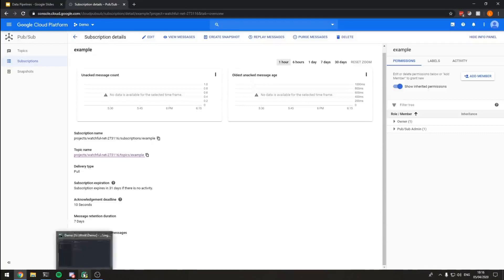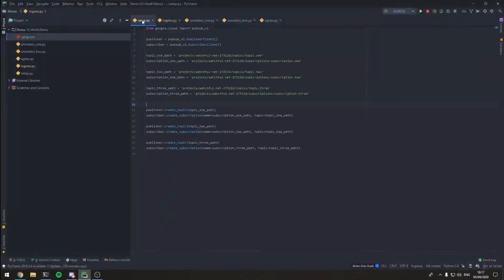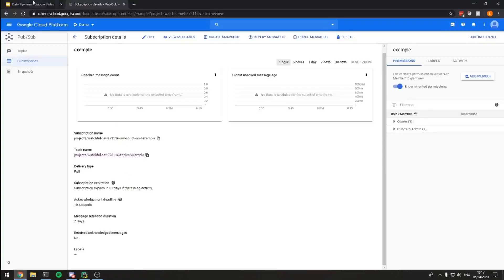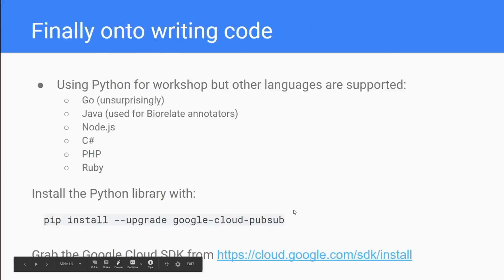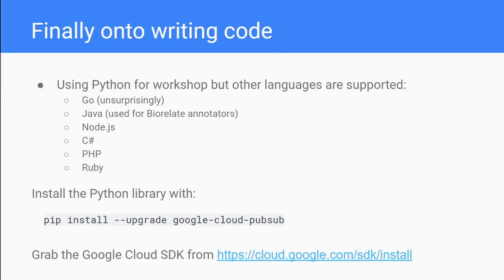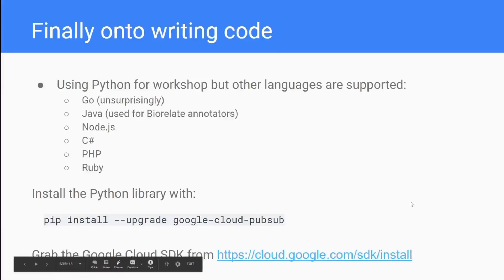Now if we want to look at how to do this programmatically - for this workshop I'm using Python, but Google PubSub is supported in other languages including Go, Java, Node.js, C#, PHP, and Ruby. To install the Python library just use pip install as with any other library - you want `google-cloud-pubsub`. You'll also want the Google Cloud SDK installed, which you can get from Google's website.